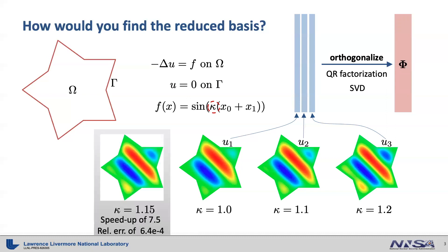Now with this reduced basis phi, for example using SVD, we can predict the solution for Poisson equation with kappa equals 1.15 with a solving time speedup of 7.5 and a relative error of 6.4 times 10 to the negative 4. You can generate these numerical results yourself using Librom. Please note the description below for the detailed instruction about which command line options are available in Librom to generate these results.